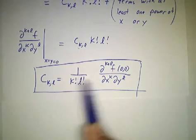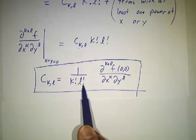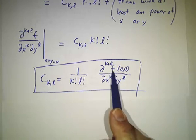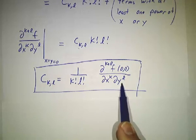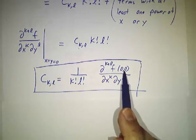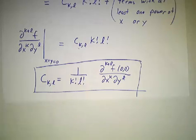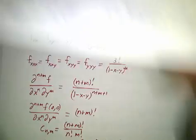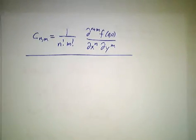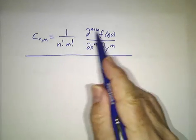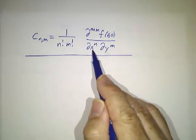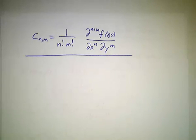You get the formula for c_kl is 1 over k factorial l factorial times the k plus l derivative, k times with respect to x, l times with respect to y, and then evaluate it at the origin. Or if you write it in terms of n and m instead of k and l, you have c_nm equals 1 over n factorial m factorial, the n plus mth derivative with respect to x n times and y m times.